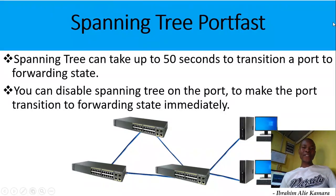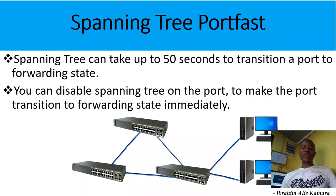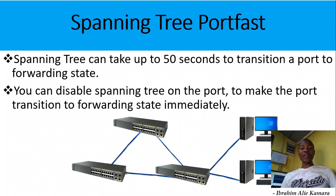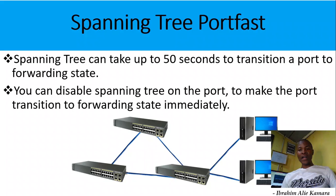When you talk about spanning tree, before switches start to forward frames within a network, it will take up to 50 seconds to transition a port to forwarding state. 50 seconds is a long time within a production network, so to prevent this delay we need to disable spanning tree on the port using portfast, to make the port transition to forwarding state immediately. With portfast we can disable spanning tree on each port either globally or in interface mode.